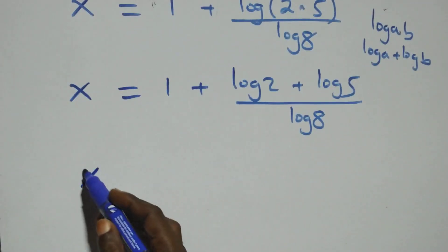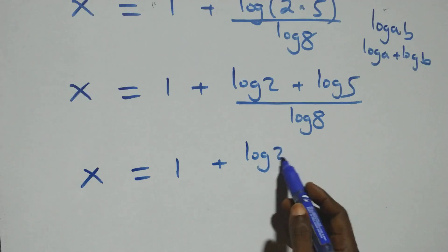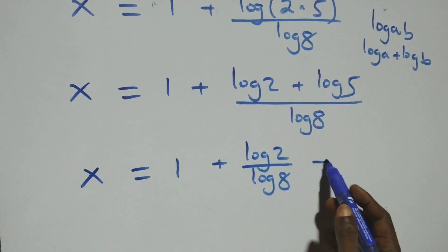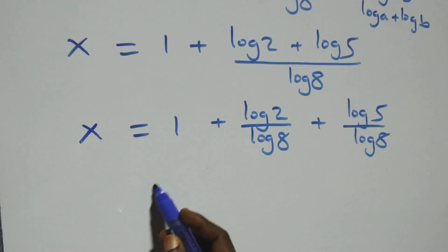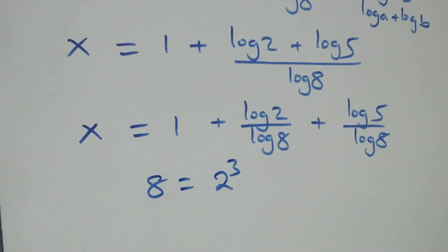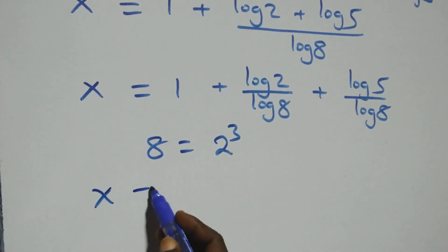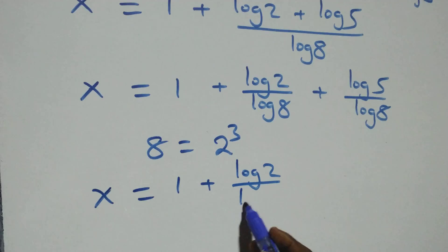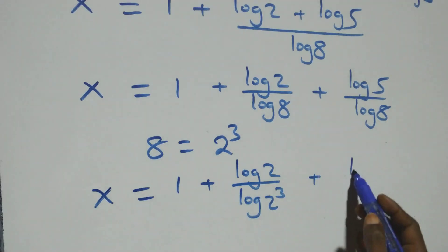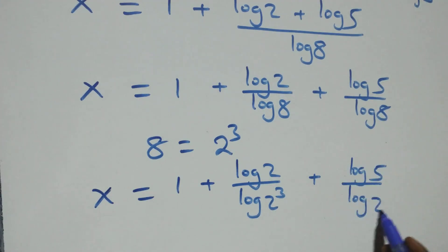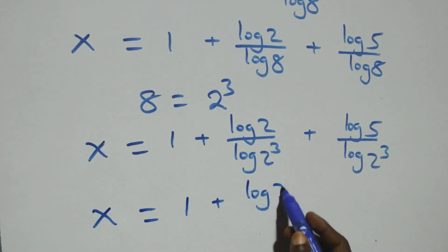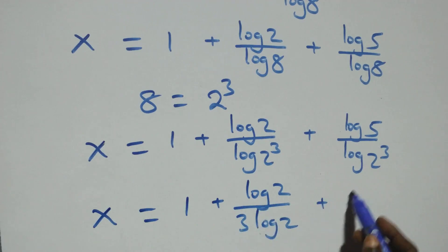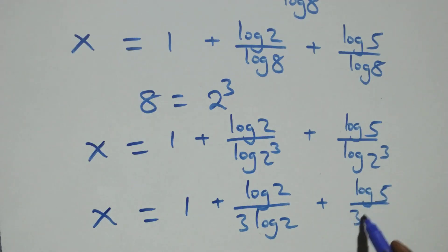From here, we can rewrite 8 as 2 times 2 times 2, that is 2 cubed. So what we have becomes X equals to 1 plus log 2 over log 2 cubed, plus log 5 over log 2 cubed. We apply the power rule of logarithm — the 3 comes down — giving X equals to 1 plus log 2 over 3 log 2, plus log 5 over 3 log 2.